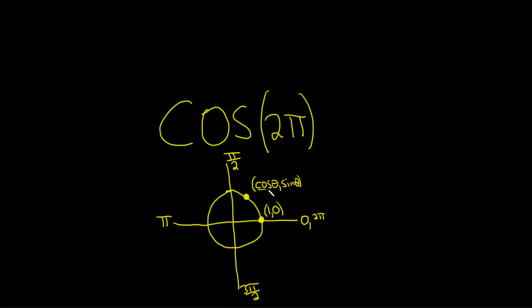So the cosine of 2π should be equal to the x-coordinate here. So that means that the cosine of 2π is equal to 1. And that would be the answer.